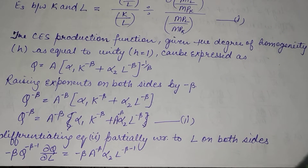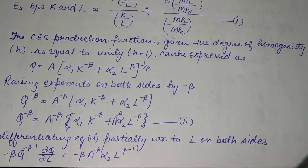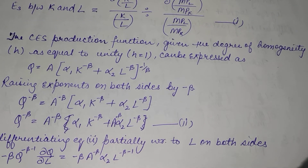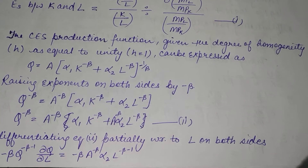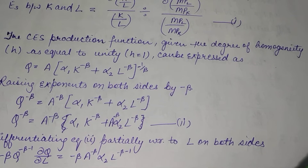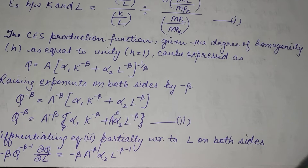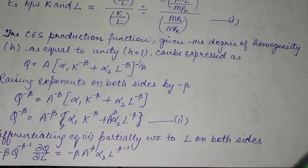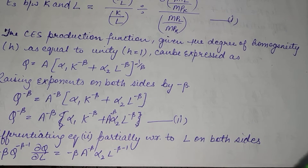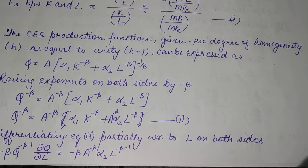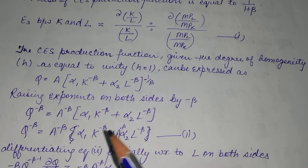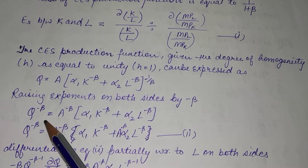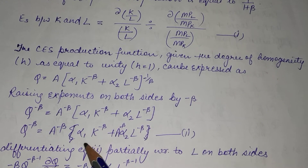Now we will differentiate equation 2, first partially with respect to L and then partially with respect to K. Differentiating equation 2 partially with respect to L on both sides, we get: −β·Q^(−β−1)·(∂Q/∂L) = −β·A^(−β)·α₂·L^(−β−1). When partially differentiating with respect to L, the K term is treated as constant and taken as zero.